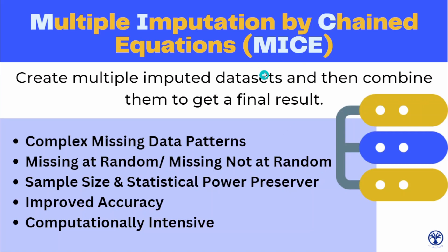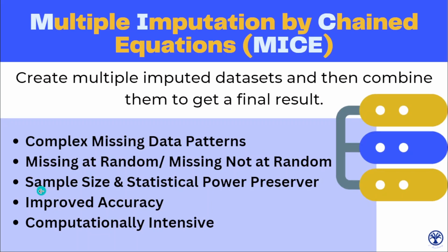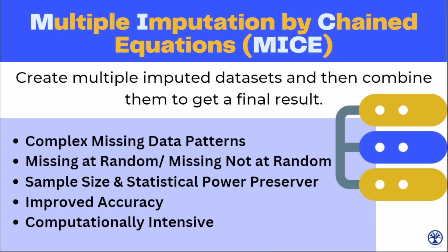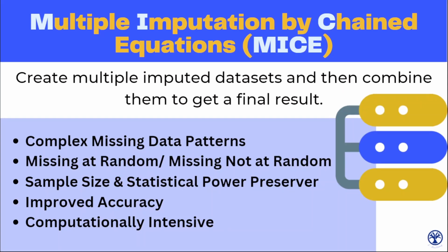MICE can handle multiple missing values that are appearing at random as well as not appearing at random, because at the backend it is using regression models to estimate the missing values. MICE imputes multiple values for each missing data point, which helps to preserve sample size and statistical power compared to other imputation methods that only impute a single value. That's why it provides more accurate estimates compared to the rest of the imputation techniques, making it a good choice for datasets with complex missing data patterns.